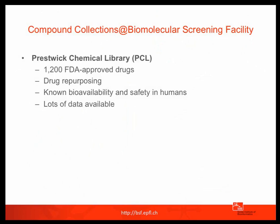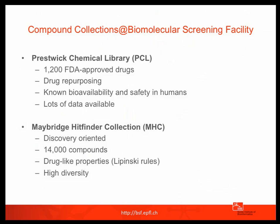The facility had two compound collections. One is the Prestwick Chemical Library, composed of 1,200 FDA-approved drugs. Screening those is interesting for drug repurposing — testing known drugs for other indications — and also because lots of data on bioavailability and safety is available. On the other hand, we used the Maybridge HitFinder collection, a discovery-oriented collection of 40,000 small molecules. It's not a huge high-throughput screening, but it could be done with the instrumentation at hand at EPFL, and these compounds are supposed to have drug-like properties and high diversity.